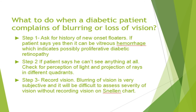When a patient complains of blurring of vision, the most important thing is to ask for the history of floaters or any shadows. If the patient complains of new onset floaters and is a diabetic, you should always suspect vitreous hemorrhage, which is a sign of proliferative diabetic retinopathy. It is very important to check for perception of light and projection of rays from different quadrants to rule out any retinal detachment.